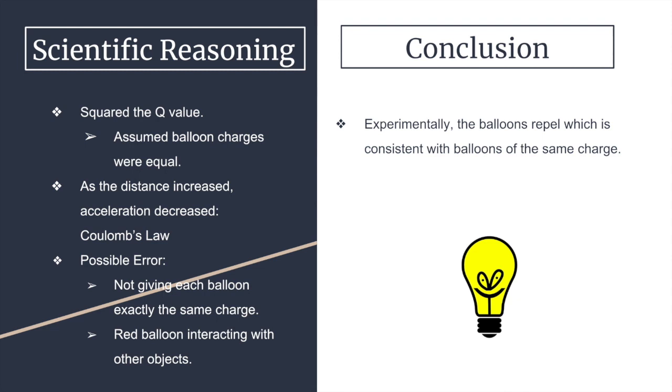We can conclude that our red balloon has a charge of about 8.91 times 10 to the negative 7 coulombs from our experimental mass and acceleration of the balloon, and that the yellow balloon, which was similarly charged, has equal value since the balloons repelled in our experiment rather than attracted each other.